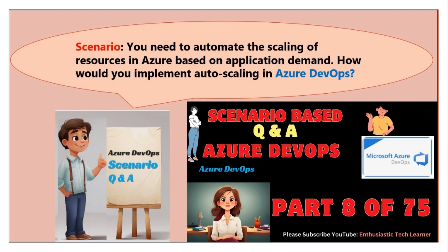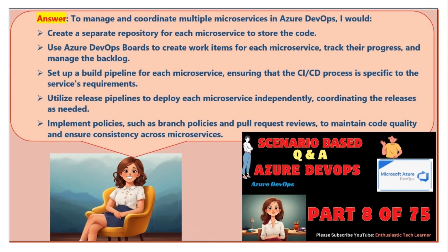Scenario eight: you need to automate the scaling of resources in Azure based on application demand. How would you implement auto scaling in Azure DevOps? To implement auto scaling, I would utilize Azure Resource Manager (ARM) templates or infrastructure as code (IaC) scripts to define the infrastructure. Define scaling rules and policies within Azure Monitor and Azure Auto Scale.